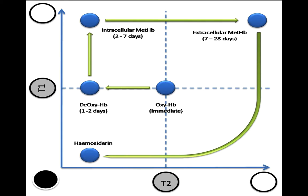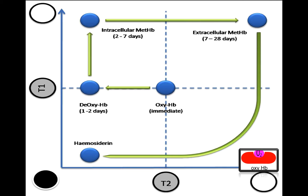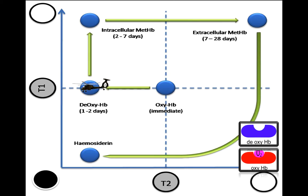This graph shows the easiest technique for memorizing the stages of hemorrhage. The central part of the graph labeled 'immediate' represents the hyperacute stage. At this stage, oxyhemoglobin is still present in the area, so it will be isointense in both T1 and T2. After one to two days, the oxyhemoglobin will be converted into deoxyhemoglobin.